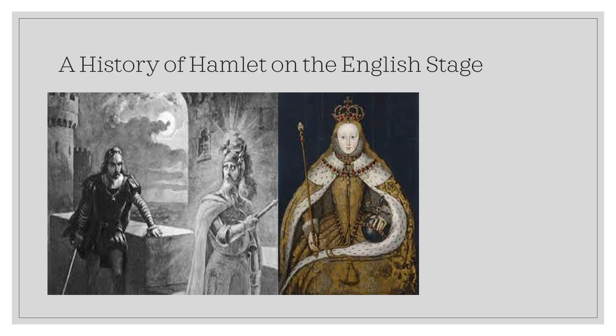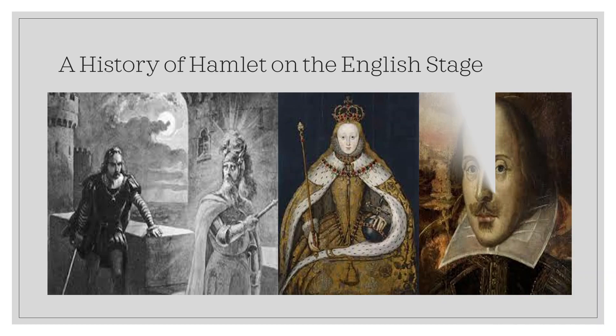With the Restoration in 1660, Hamlet returned to the stage. Most Restoration theatres played it with movable flats painted with scenery — whenever the scene changed, the stagehands brought out new flats. Its universal themes of doubt, madness, the inevitability of death, and political intrigue ensure it a place in popular culture, even though the political uncertainties of late Elizabethan England have long since passed.